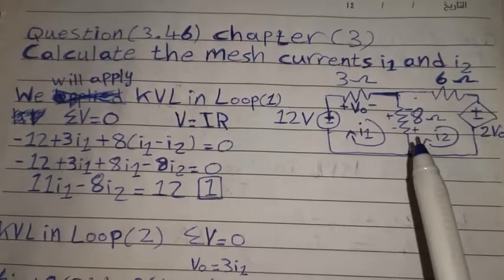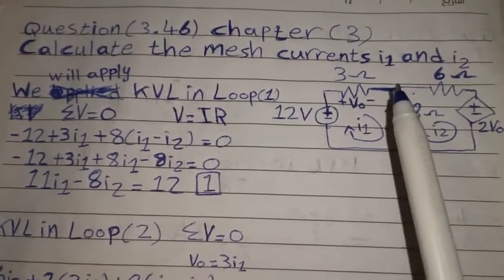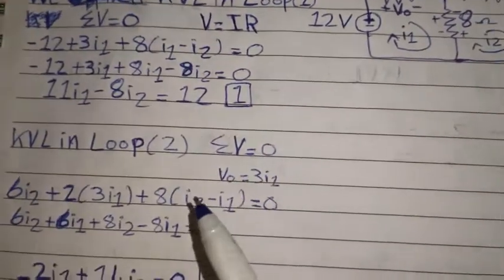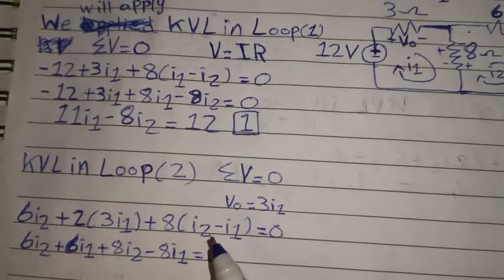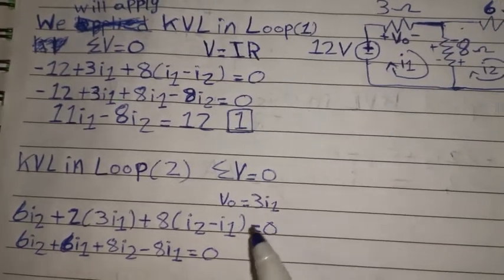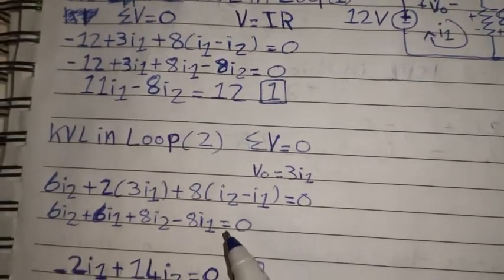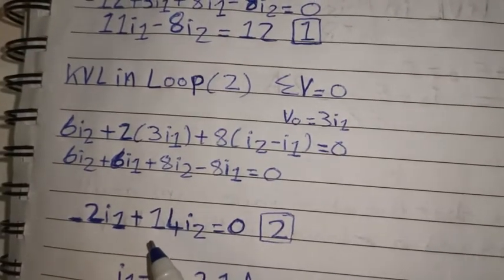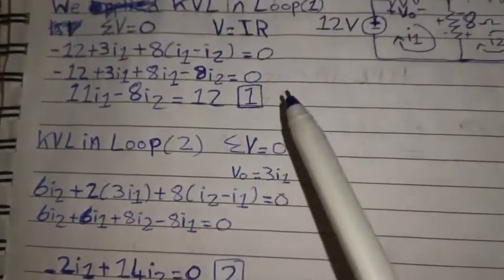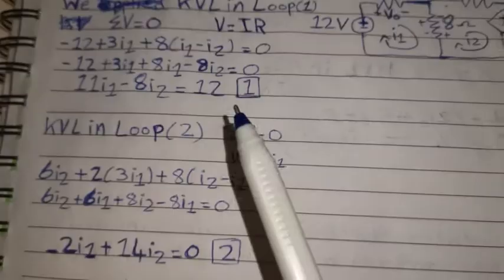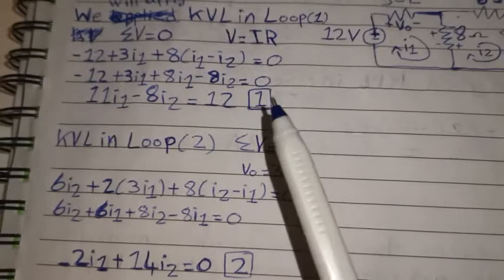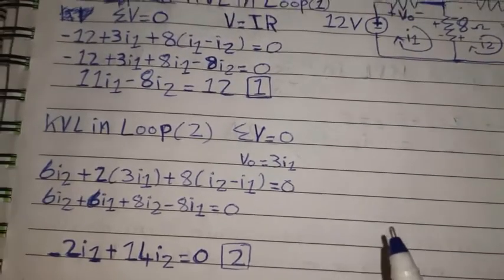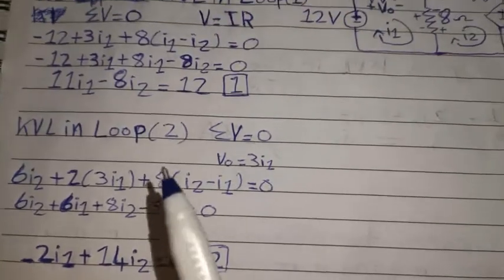Then I2 will go from positive to negative in this resistor and I1 will go from negative to positive, so we say 8 multiplied with (I2 minus I1) all equal zero. After simplification, the second equation will be: minus 2I1 plus 14I2 equals 0. We can put the first and second equations into the calculator using mode 5-1 to determine I1 and I2.